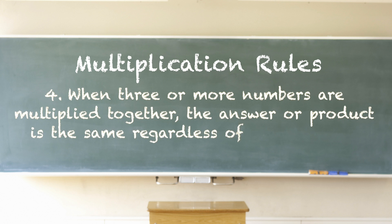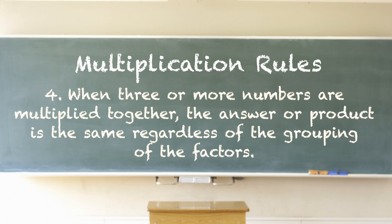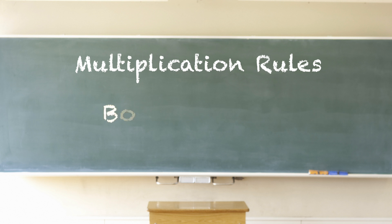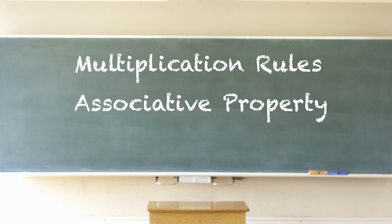When three or more numbers are multiplied together, the answer or product is the same regardless of the grouping of the factors. Two times the grouping of three times four is equal to the grouping of two times three, times four — both are equal to 24. This is called the associative property.